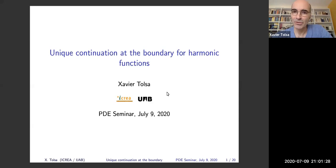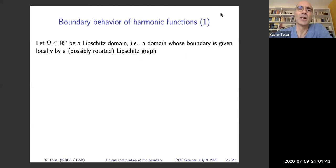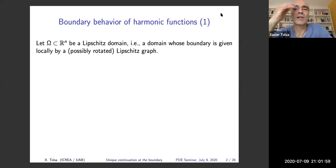First, I will start by recalling some related results on the behavior of harmonic functions at the boundary of domains. Suppose we have a Lipschitz domain omega. During all the talk, omega will be a Lipschitz domain in R^n — essentially a domain whose boundary is given by pieces of rotated Lipschitz graphs.